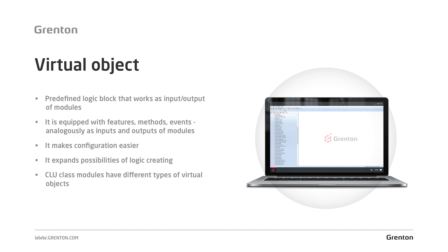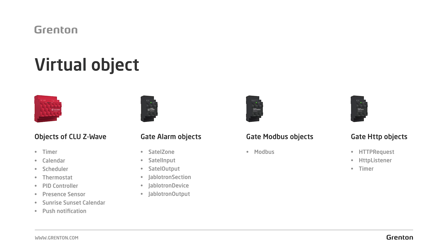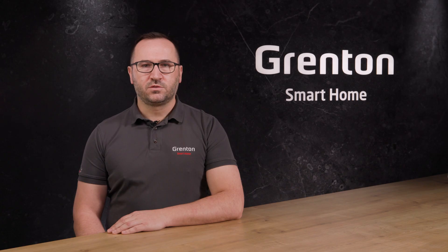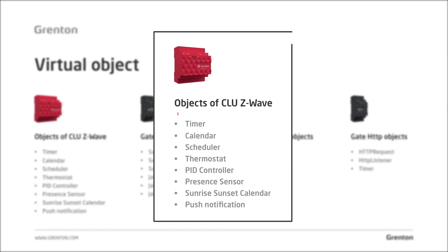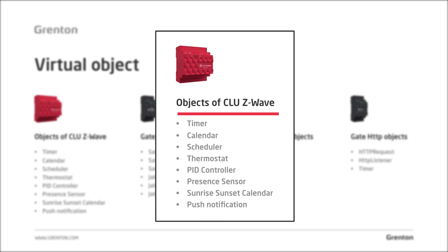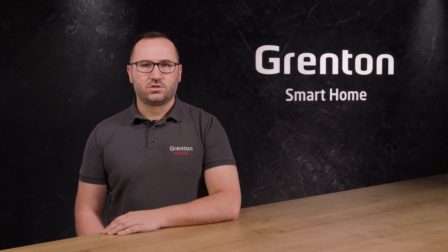Virtual objects were created mainly to speed up the configuration process. For example, instead of creating several different scripts for your project, we can use a virtual object which has already been configured to perform a given function. You will find various virtual objects in different modules in our system. You can find the most in the CLU module. From the virtual objects available there today, you will find, among others, a timer, calendar, scheduler, but also slightly more advanced objects such as a virtual thermostat, event scheduler, presence sensor, sunrise sunset calendar, or an object which will allow us to send push notifications.